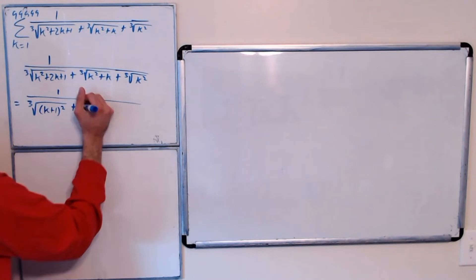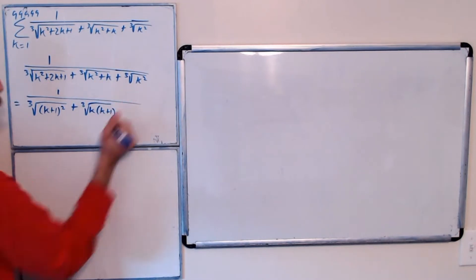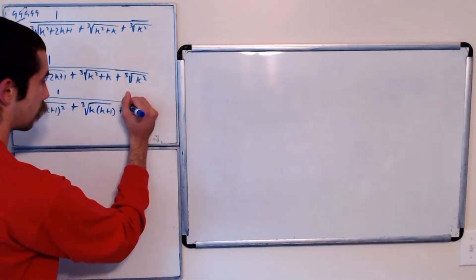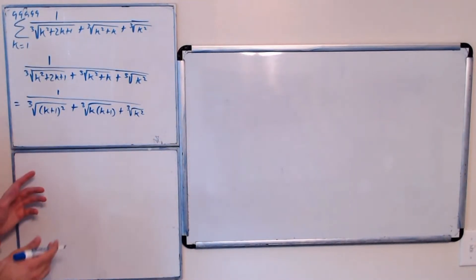This term, again, it's still the cubed root. We can factor out a k, so it's k times k plus 1. And here this is just plus k squared, the cubed root of k squared.